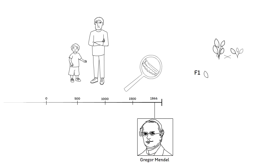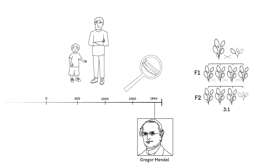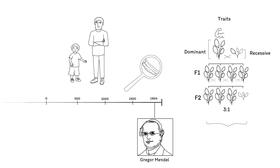All plants of the first generation were tall. When these plants of the first generation were self-pollinated, however, a three-to-one pattern arose in the second generation — three tall plants for one short plant. He came to the understanding that certain characteristics, or traits, of the plant dominated others. They are called dominant traits, and they mask other traits, the so-called recessive traits. When a certain trait follows the inheritance patterns of Mendel, we talk about Mendelian inheritance.